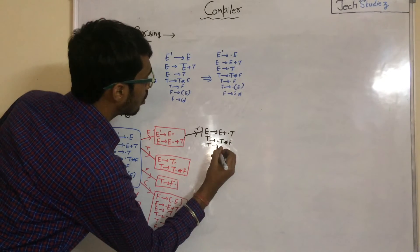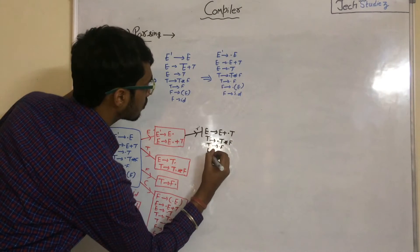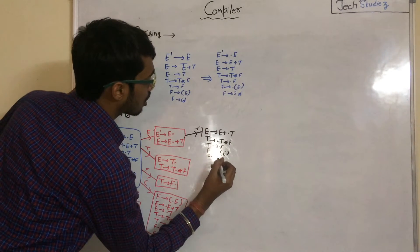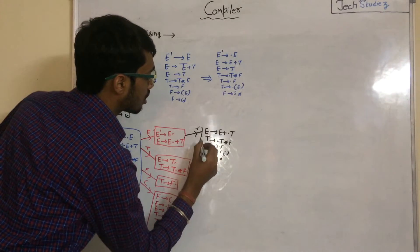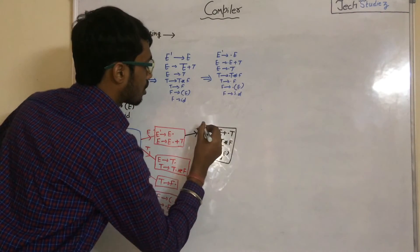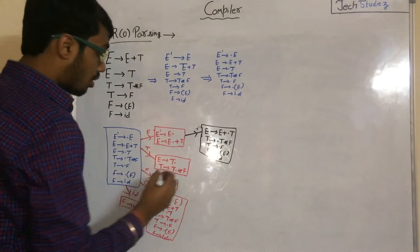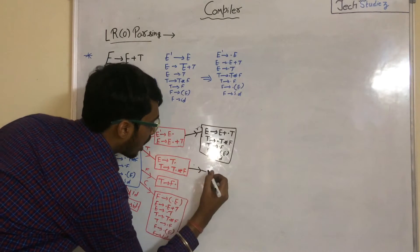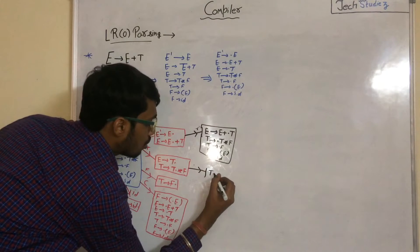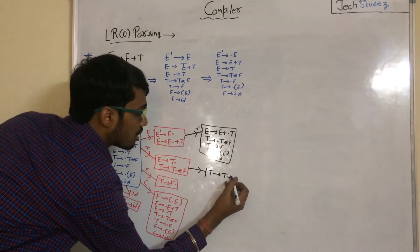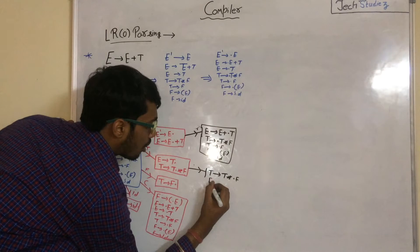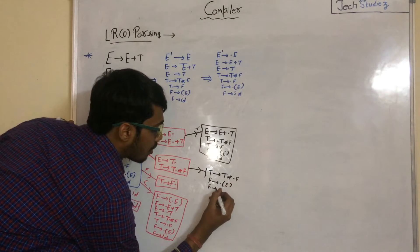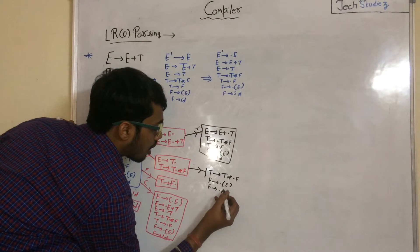Also add T to ·F and all productions from F: F to ·(E) and F to ·id. Now apply GOTO with star — what we get is T to T star ·F. Add all productions from F: F to ·(E) and F to ·id.